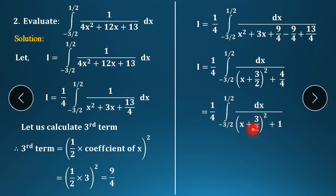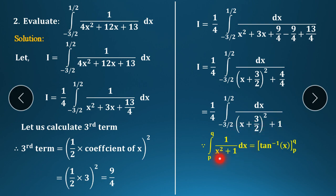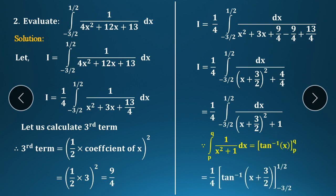So the denominator becomes (x + 3/2)² + (13/4 − 9/4) = (x + 3/2)² + 4/4 = (x + 3/2)² + 1. Now we apply the formula: integration of 1/(x² + 1) dx = tan⁻¹(x), with limits from −3/2 to 1/2. Here x means the bracket (x + 3/2).